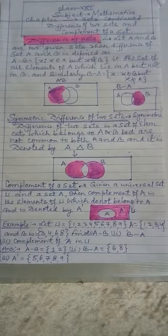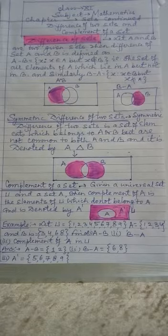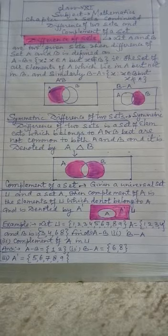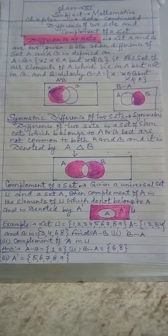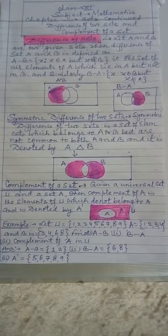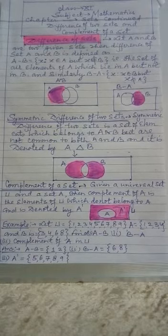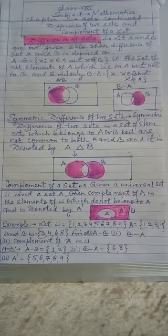So clearly you can see in Venn diagram, A intersection B has to be left. So all shaded part that way shows symmetric difference, which is denoted by A delta B. So symbolically also you have to understand.